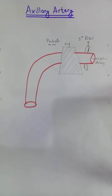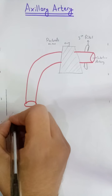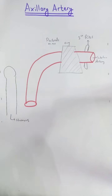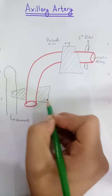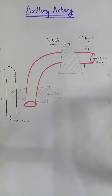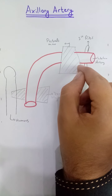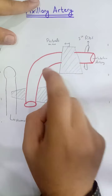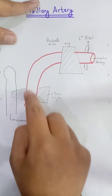The axillary artery terminates by passing anterior to the teres major muscle near the humerus. For descriptive purposes, the axillary artery is divided into three parts: the first part is between the lateral border of the first rib and the medial border of pectoralis minor — it has one branch. The second part is posterior to pectoralis minor — it has two branches. The third part continues from the lateral border to the inferior border of teres major — it has three branches.